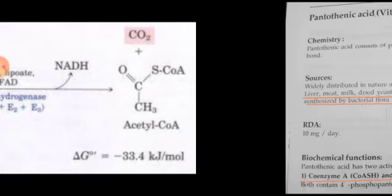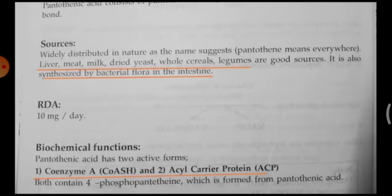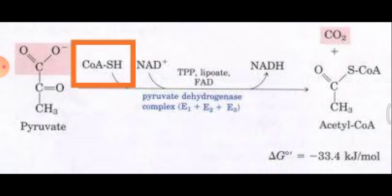Coenzyme A has wide involvement in various metabolic functions. In carbohydrate metabolism, lipid and protein metabolism, coenzyme A is involved. This is the illustration where pyruvate is converted to acetyl-CoA. In this process, various factors are required and one of the factors required for this reaction is coenzyme A, with the help of enzyme pyruvate dehydrogenase. This comes in the glycolytic pathway joining to the Krebs cycle, where pyruvate, the end product of glycolysis, is converted to acetyl-CoA.